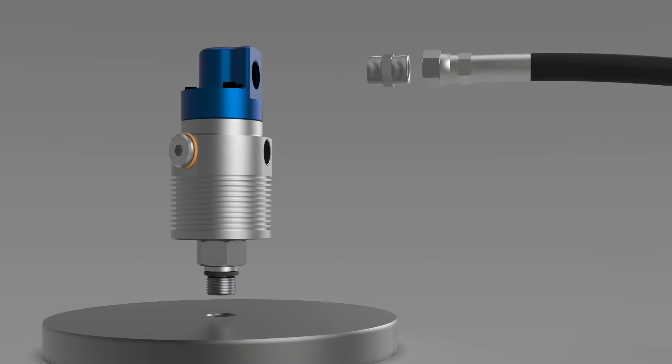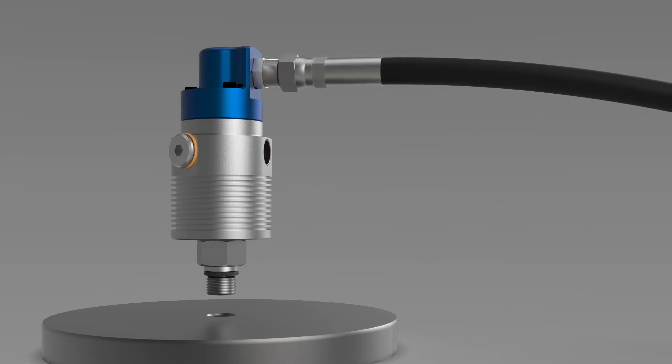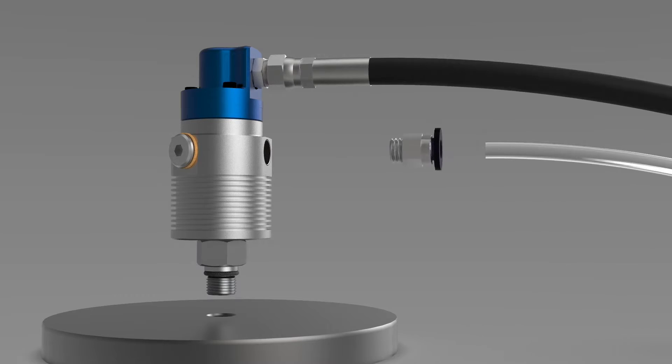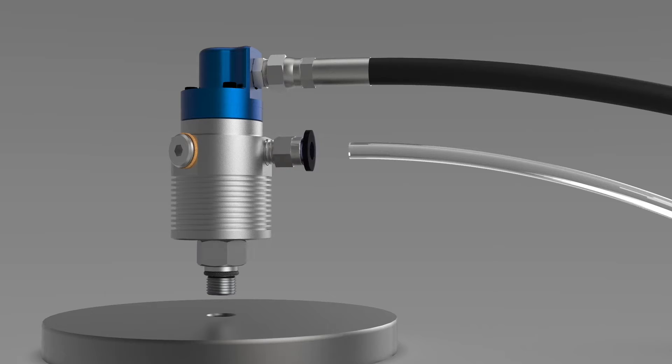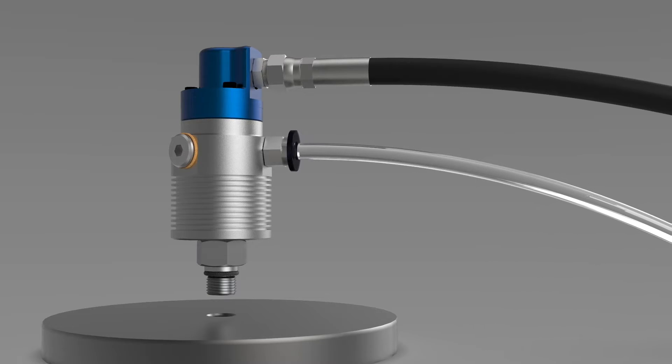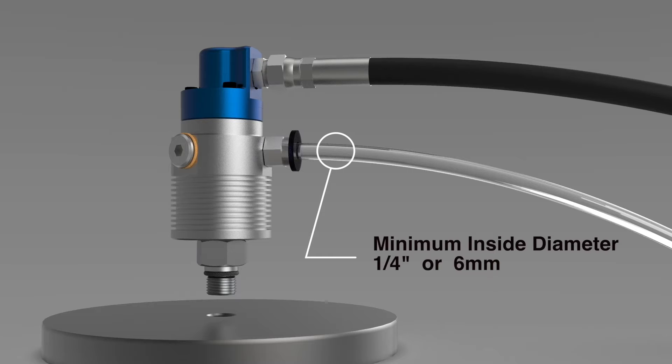Step two: connect the drain hose to the union. Note that the minimum inside diameter for the drain line is about a quarter inch or six millimeters. Check to see that any supplied drain plugs are tight enough to seal.